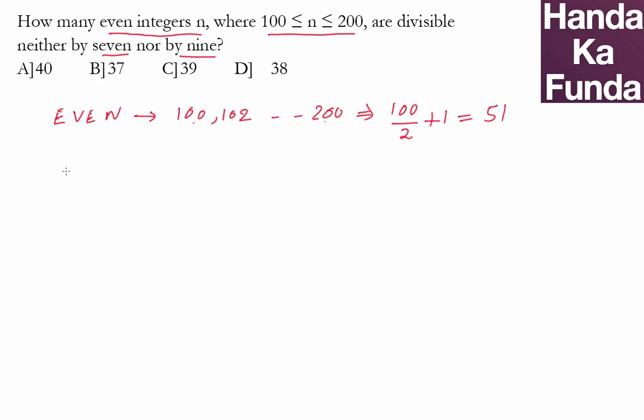Which ones are those which I don't like? I don't like the ones which are divisible by 7, and I don't like the ones which are divisible by 9. But these numbers also have to be even. That means I do not like the ones which are divisible by 14, and I do not like the ones which are divisible by 18.